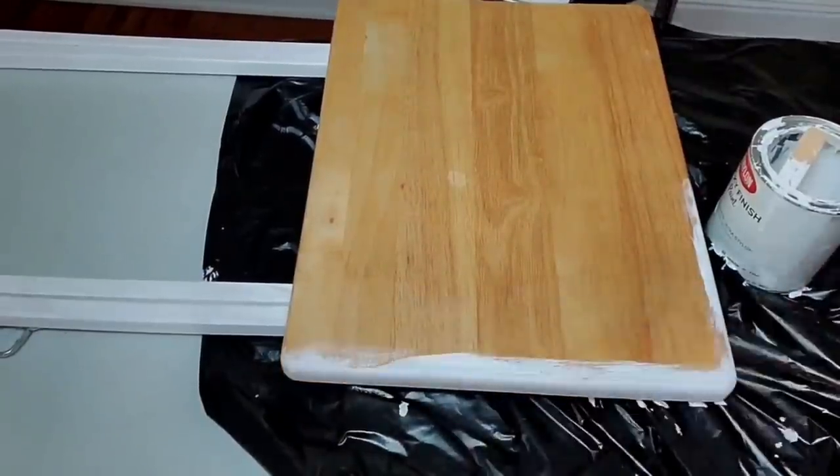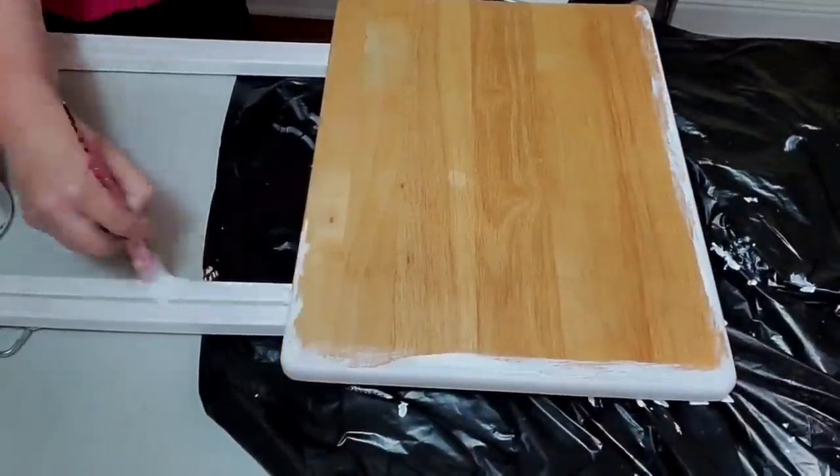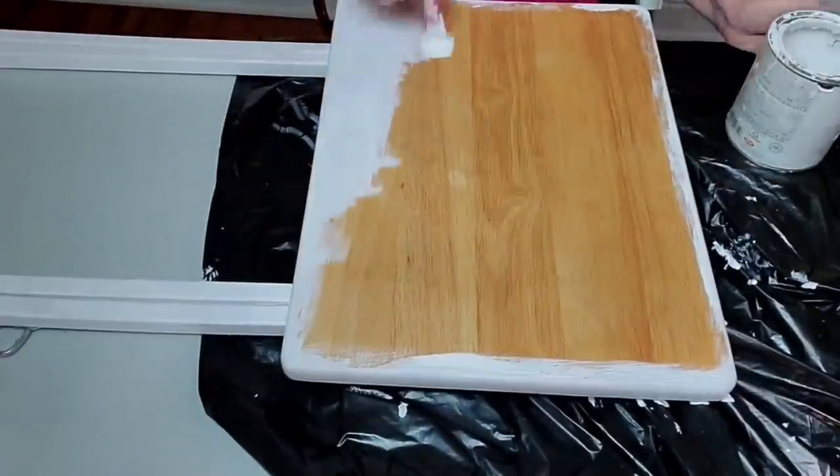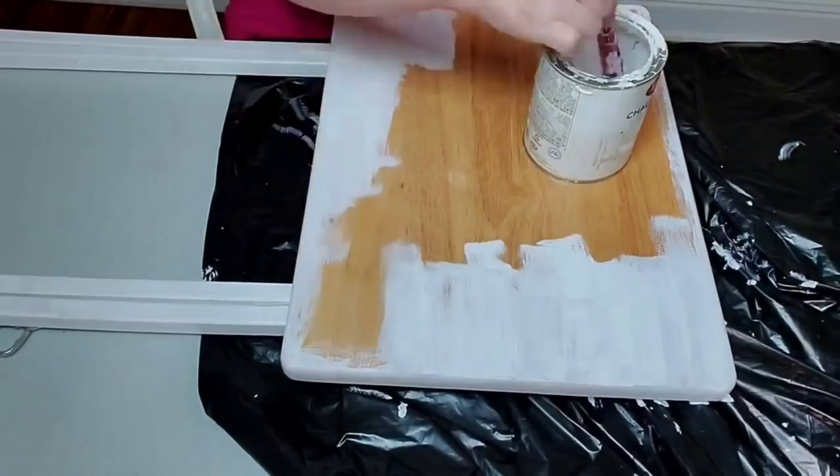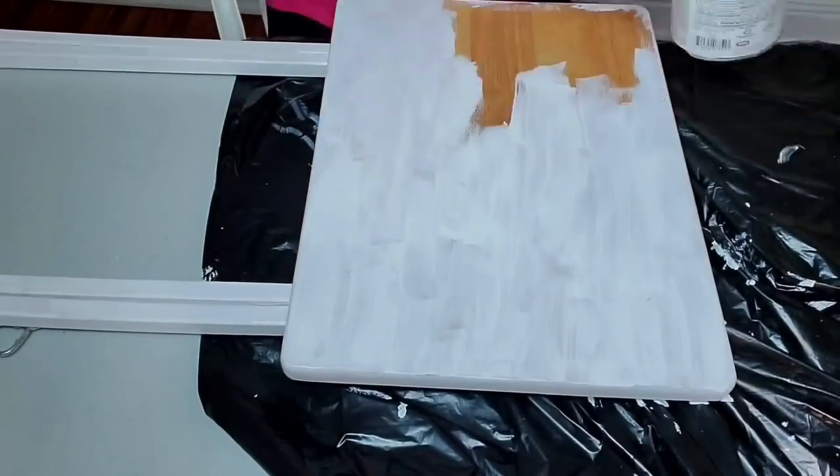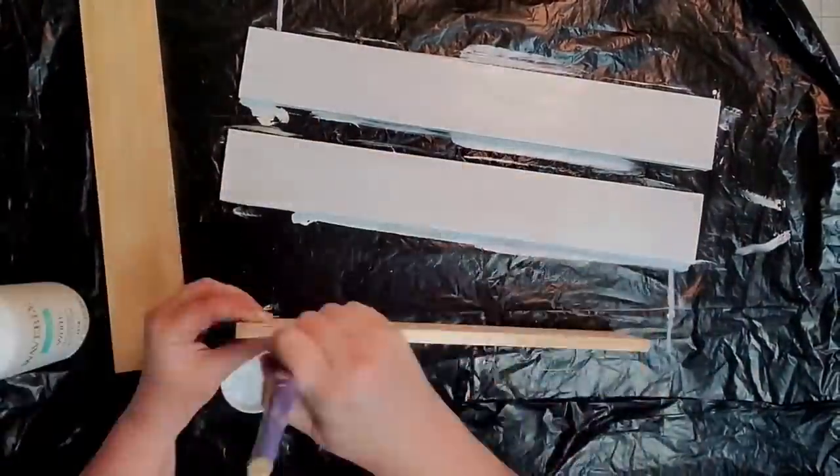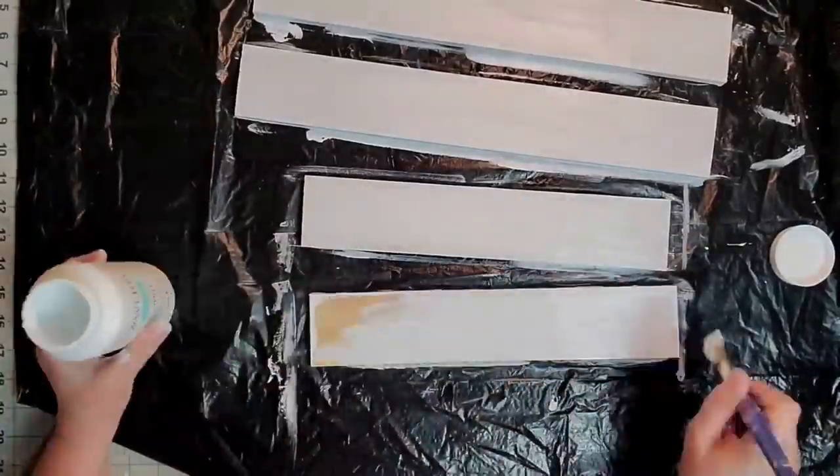The first thing I'm going to do is take my Krylon chalk paint and give my table a good coating. It took three coats y'all to really cover this table. Then I gave my trim pieces two good coats of white chalk paint as well.